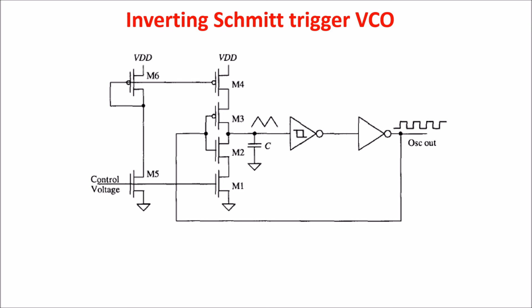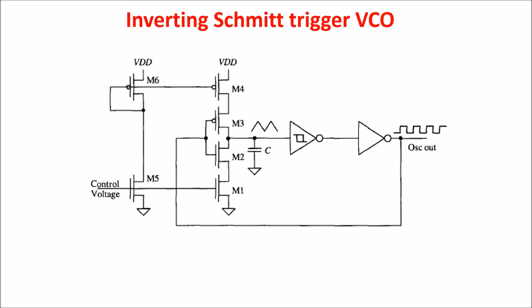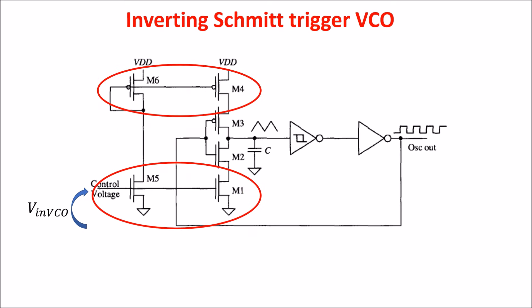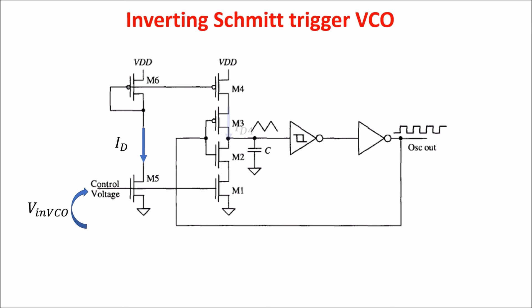Here we see another example — the use of the Schmitt Trigger in a voltage-controlled oscillator (VCO). We set the input voltage VNVCO to control the oscillation frequency. M1, M5 and M4, M6 are in a current mirror configuration, so the current ID generated by VNVCO is mirrored in the other branch of the circuit. We call ID4 the current flowing in M4 and ID1 the current flowing in M1. These currents can differ from ID because the mirror is not perfect and its output resistance is not infinite.